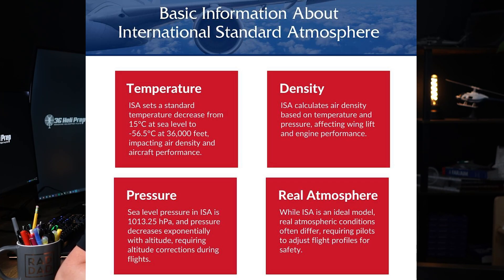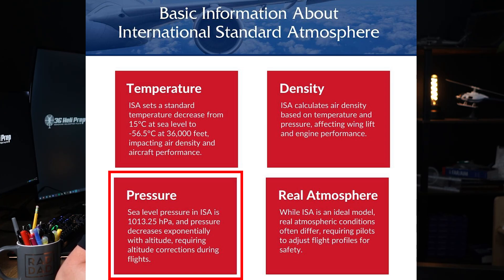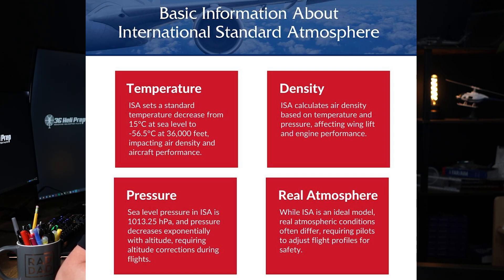ISA assumes at sea level a temperature of 15 degrees Celsius or 59 degrees Fahrenheit. The pressure is 1013.25 hectopascals or 29.92 inches of mercury. The density, if you wanted to know, is 1.225 kilograms per cubic meter — but nobody ever asked that, so don't worry about it.